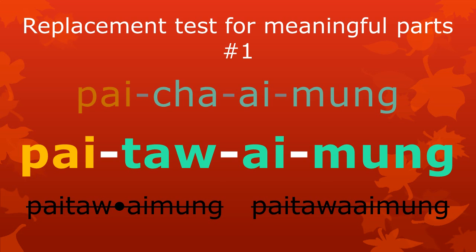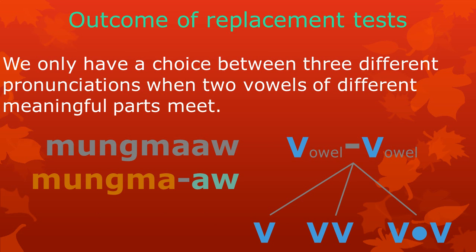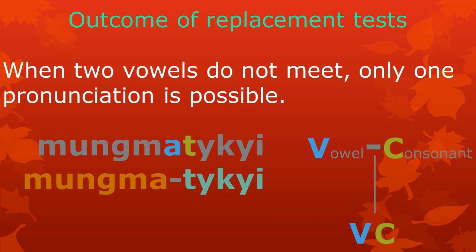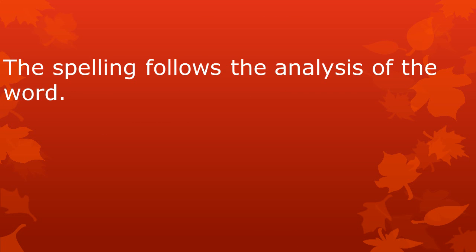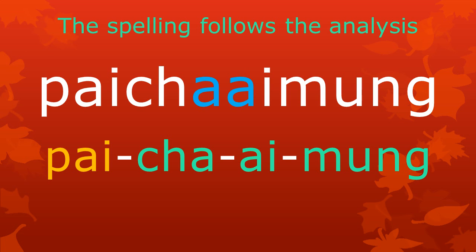So, what is the outcome of our replacement test? We only have a choice between three different pronunciations when two vowels of different meaningful parts meet. When two vowels do not meet, only one pronunciation is possible. The spelling shows the meaningful parts in their appropriate forms, which you can find by replacing the meaningful parts so that two vowels do not meet. In other words, the spelling follows the analysis of the word. Baitawaimung has three meaningful parts and they are all written in their appropriate forms.